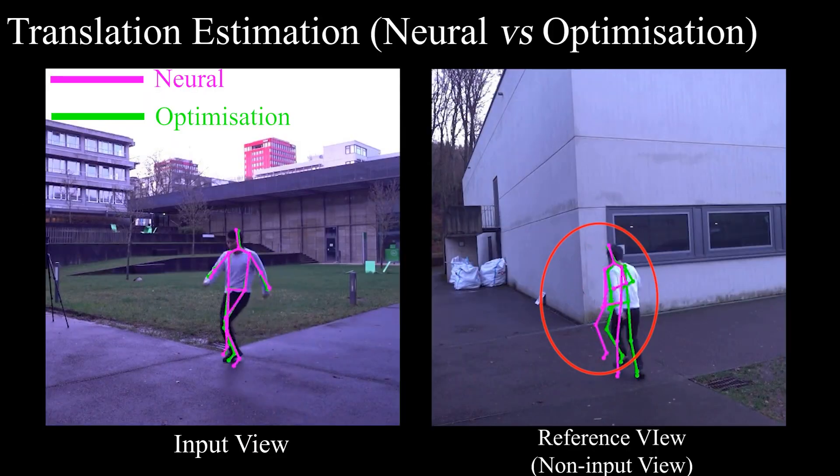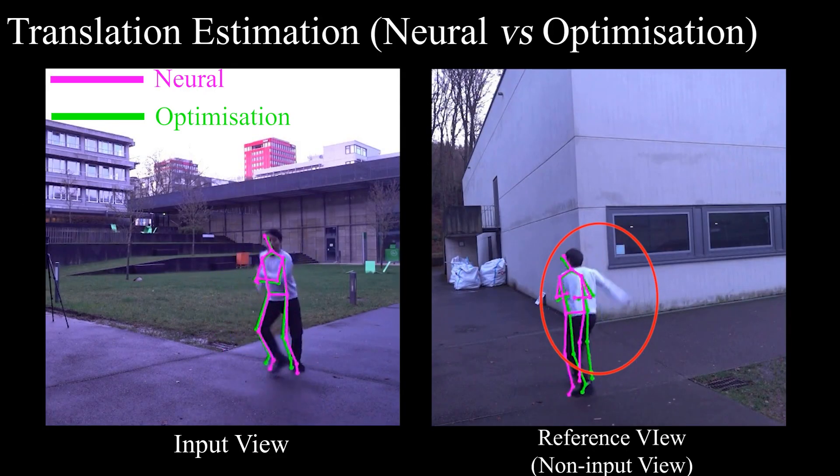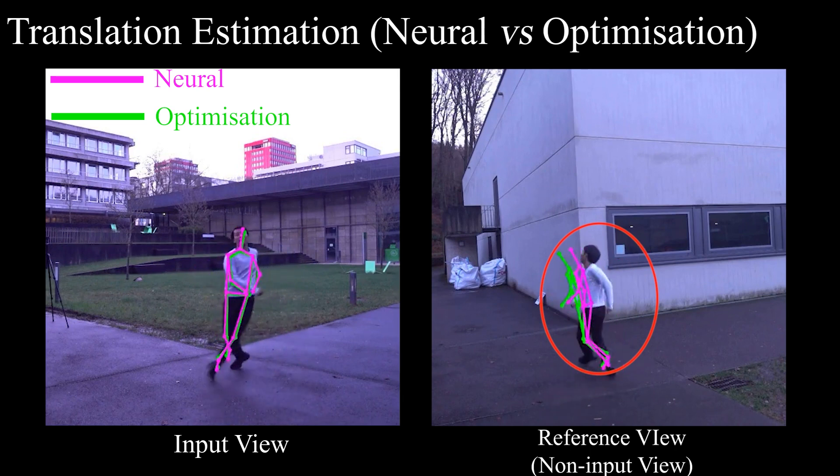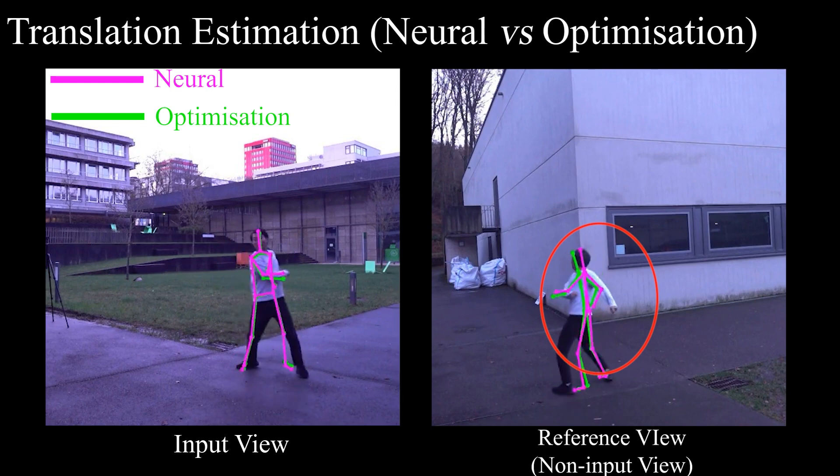We perform several ablation studies to evaluate the influence of the individual architecture components and the training policies. Our translation estimation network, which is trained with canonical 2D keypoints, shows higher stability for the scenes in the wild compared to the conventional 2D projection-based optimization.